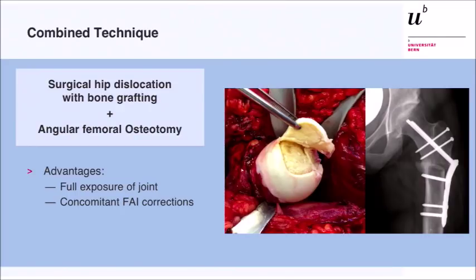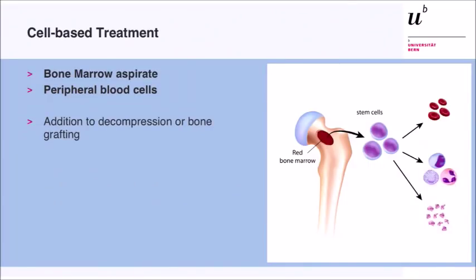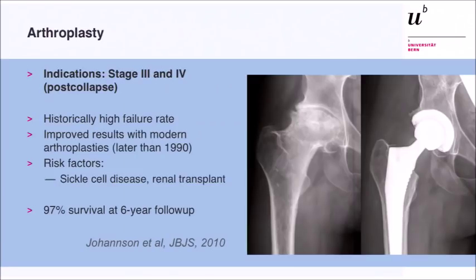These techniques can be combined. Our standard approach, as seen this morning, is surgical hip dislocation with the trap door providing direct visibility of the necrotic zone, usually combined with an angular femoral osteotomy. This gives the advantage of also addressing concomitant osseous deformities, which are very frequent — Morris told us up to 97% — so you can correct impingement deformities as well. Cell-based treatment is a new technique — bone marrow injection or injection from peripheral blood — and Young Cho Kim will present results on this.